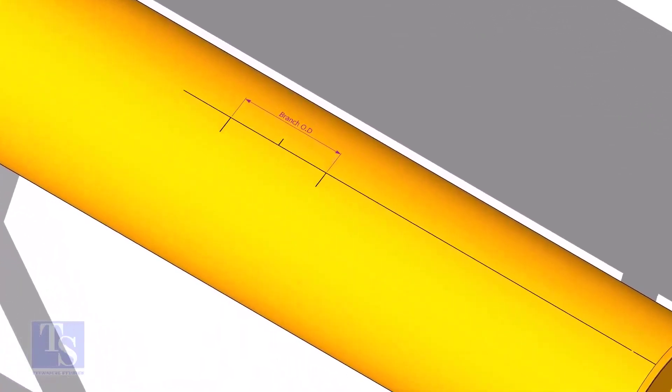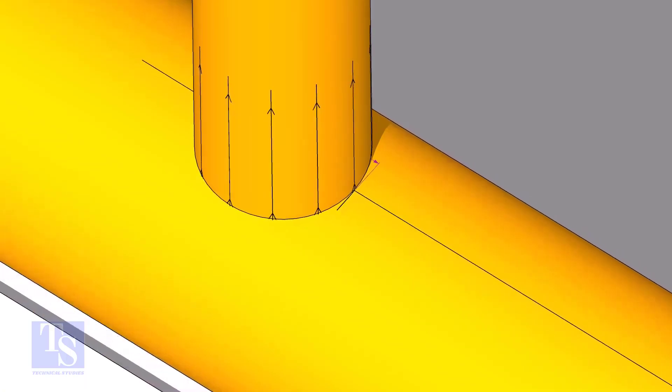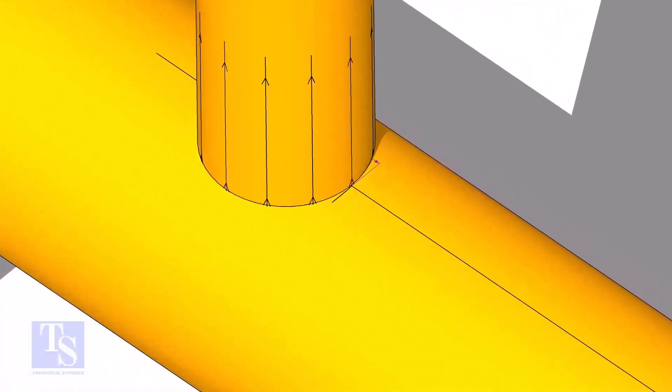Mark the branch OD on the center line of the header. Put the branch exactly on this marking, matching the branch center line.